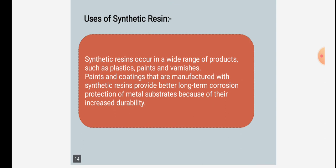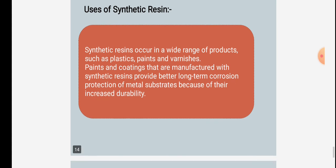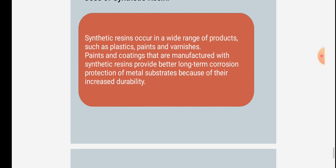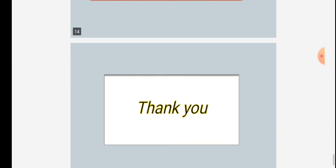Uses of synthetic resins: Synthetic resin occurs in a wide range of products such as plastics, paints, and varnishes. Paints and coatings manufactured with synthetic resins provide better long-term corrosion protection of metal substrates because of their increased durability. Thank you.